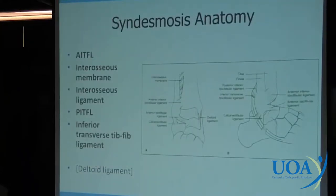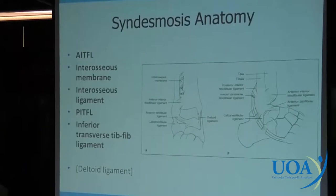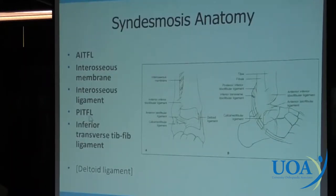To show the anatomy — sometimes people think there are only three ligaments comprising the syndesmosis. Depending on how you parse it out, there is the anterior inferior tibial fibular ligament, the posterior inferior tibial fibular ligament, the interosseous membrane (the inferior part of which is the interosseous ligament), and the lesser-known inverse transverse tib-fib ligament inferior to the PITFL. Not to be forgotten is the deltoid ligament, which plays a role in ankle and syndesmotic stability but is not part of the syndesmosis.